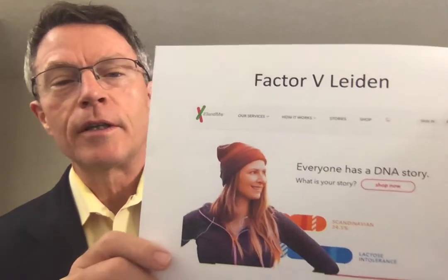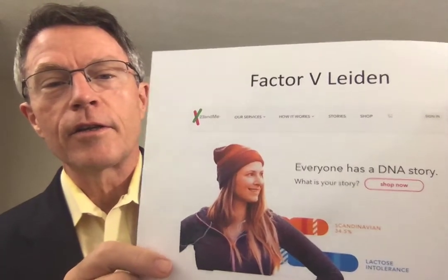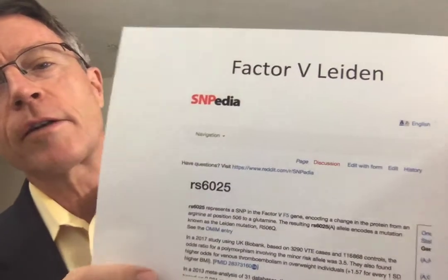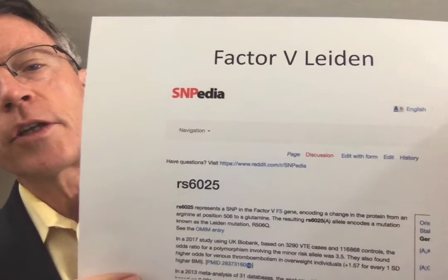One of my viewers, John Lorshider, gave a great comment about Factor V do-it-yourself diagnosis — Factor V Leiden. It was such a good comment, I decided I had to do a video on it. I had heard that you could do this through 23andMe, but I never really took the time to investigate it. So yes, you can — using 23andMe. Mr. Lorshider also gave us a good reference to 23andMe and to Snipedia.